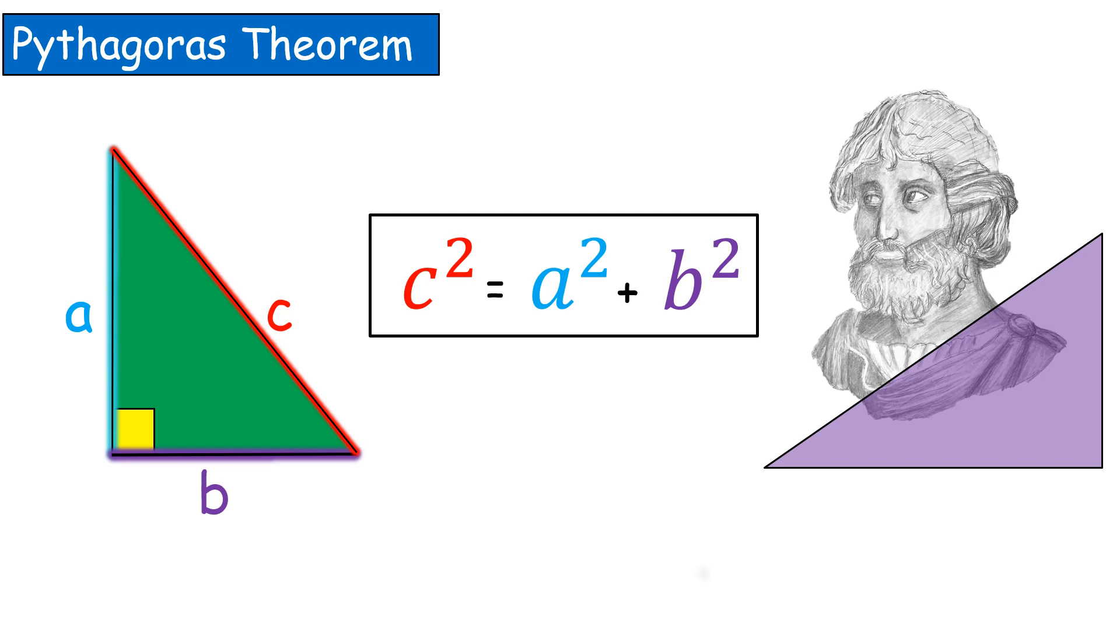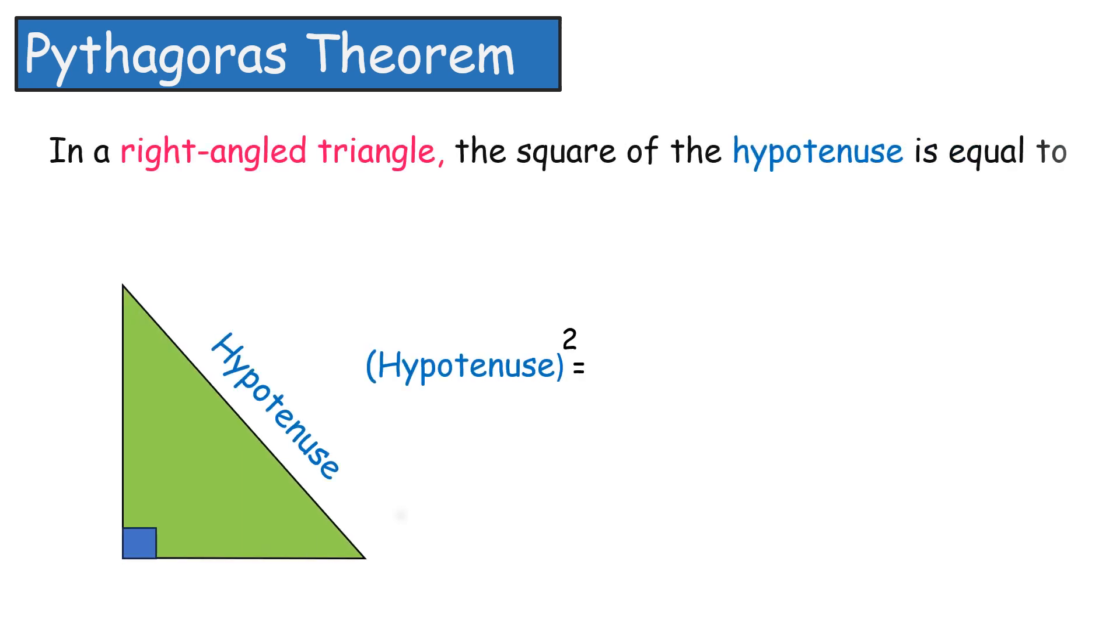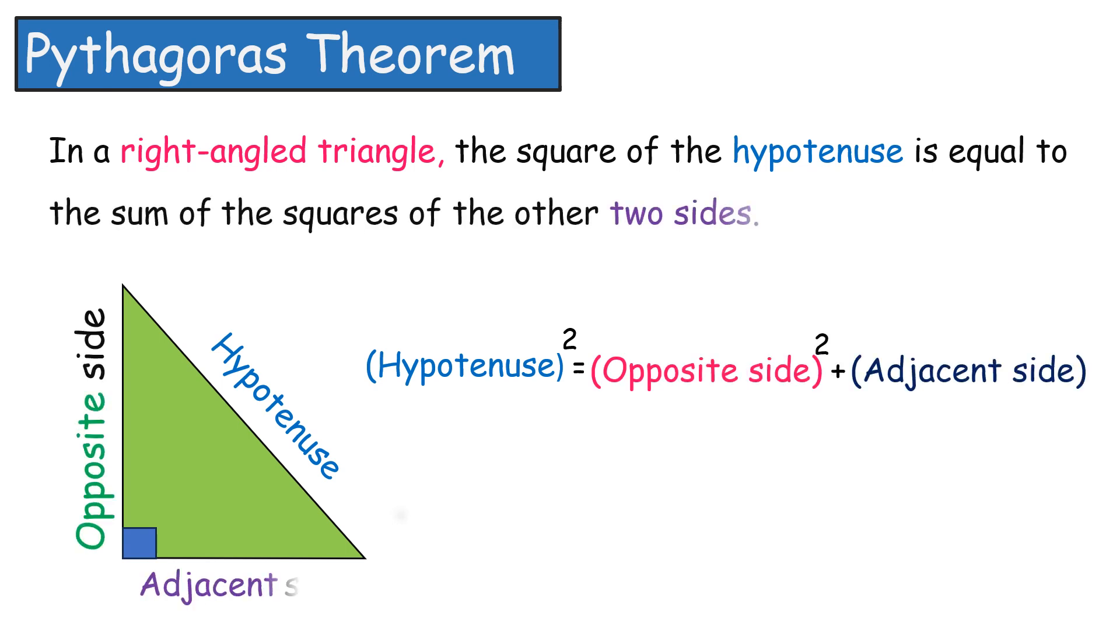This theorem applies to right-angled triangles only. This is also called Bodhayan Theorem. It states that in a right-angled triangle, the square of the hypotenuse is equal to the sum of the squares of the other two sides.